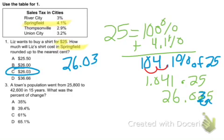On number 3, a town's population went from this to that in 15 years. What was the percent of change? We don't care about the 15 years. Simply change over the original.